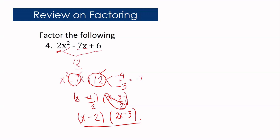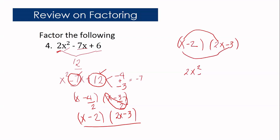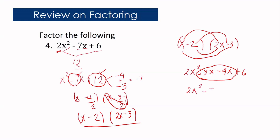To check if the factors are correct, we can multiply the two factors using the FOIL method. First terms: x times 2x equals 2x squared. Outer terms: x times negative 3 is negative 3x. Inner terms: negative 2 times 2x is negative 4x. Last terms: negative 2 times negative 3 is positive 6. Simplifying, it becomes 2x squared minus 7x plus 6, which is the same as our original given expression.